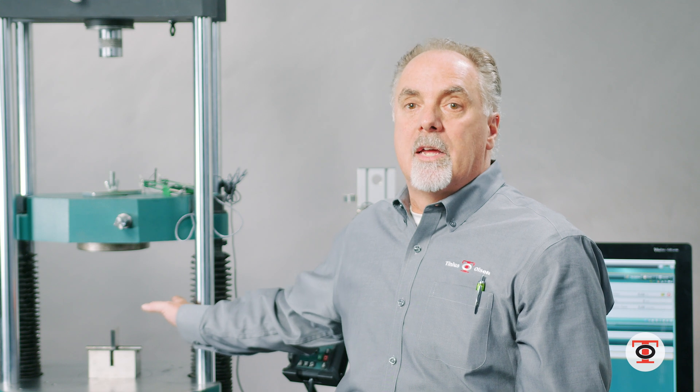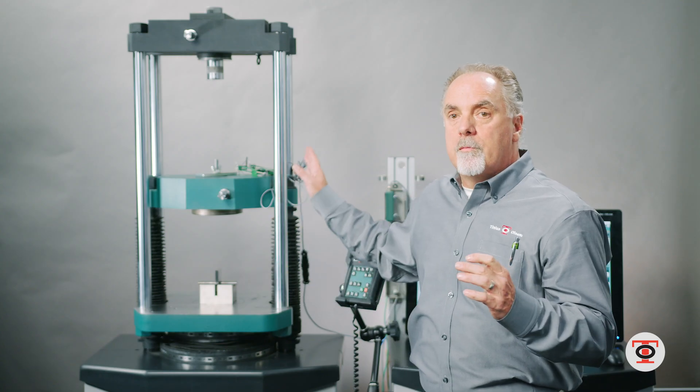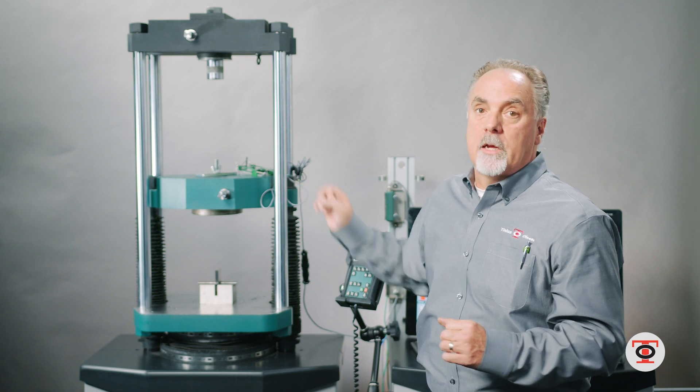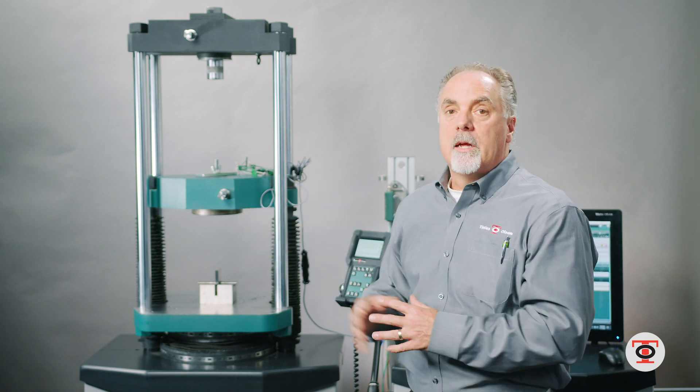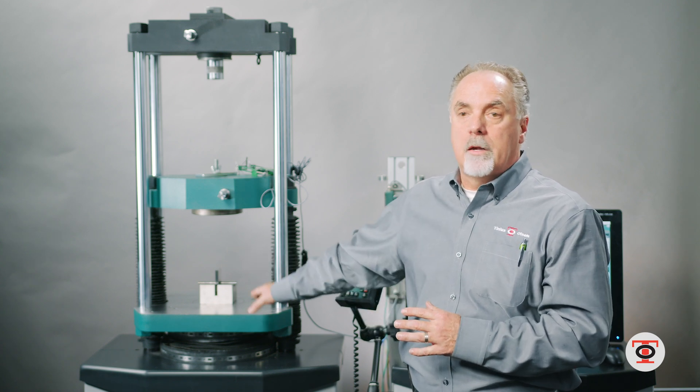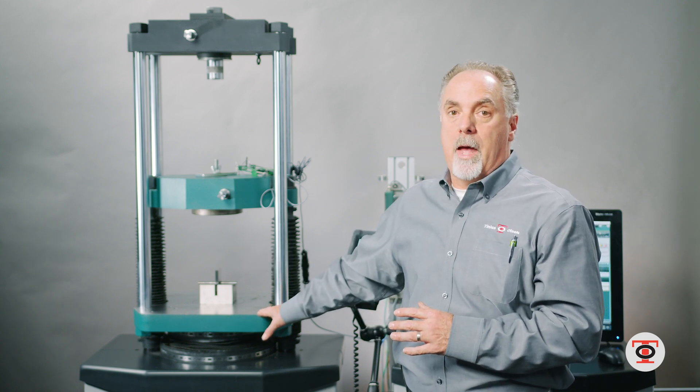This machine has the ability to do 90,000 pounds in compression. So the machine's versatility really comes into play when you're doing a double shear and you have the ability to have that compression space at 90,000 pounds.